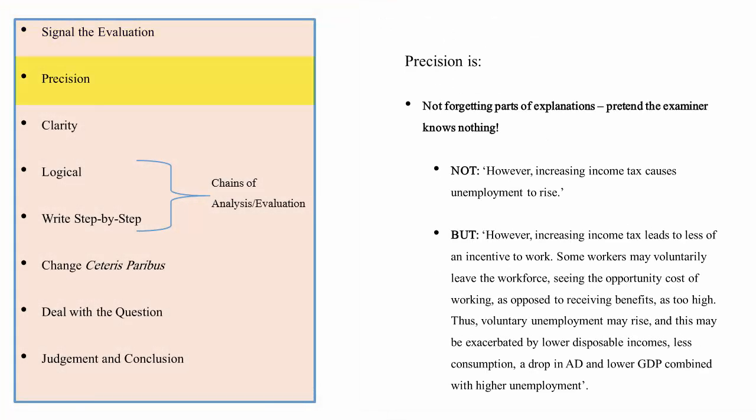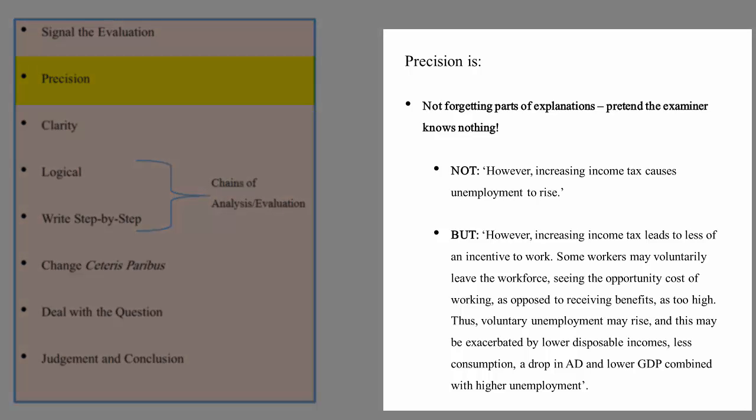It's important also as it was with analysis to be precise. I don't want to spend too long on this because I've done this already in an analysis video which you can go back and watch, but again it's not forgetting parts of explanations. For example, this is how not to do it: you don't just go however increasing income tax causes unemployment to rise. You'll need an explanation of why that is.